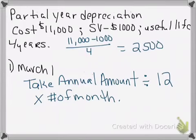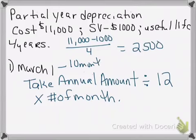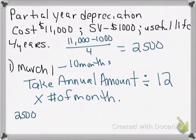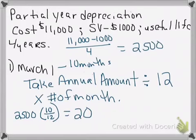In this particular case, we're looking at March — starting on March 1st. Use your fingers to count: March, April, May, June, July, August, September, October, November, December — that gives us 10 months. So from March 1st to December 31st is 10 months. We take the annual amount of $2,500, multiply by 10 and divide by 12 — or multiply by 10/12 — and that gives us $2,083.33.